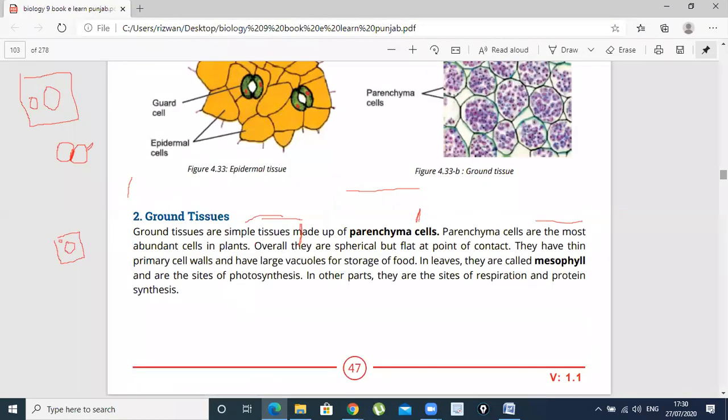These are mesophyll cells. There are two types: Palisade and Spongy Mesophyll Cells. Palisade mesophyll cells have chloroplasts and do photosynthesis. And other parenchyma cells do respiration—the breakdown of glucose.